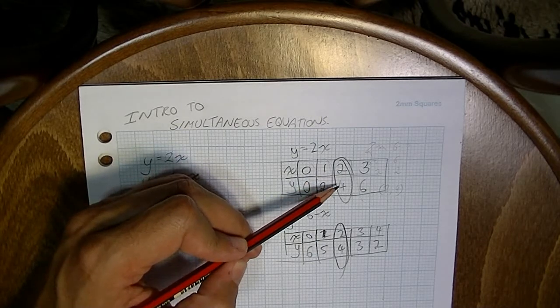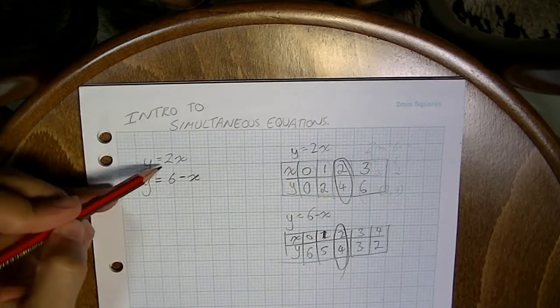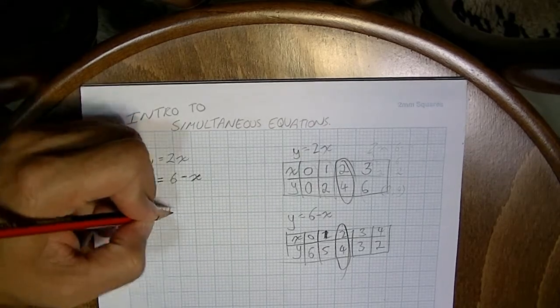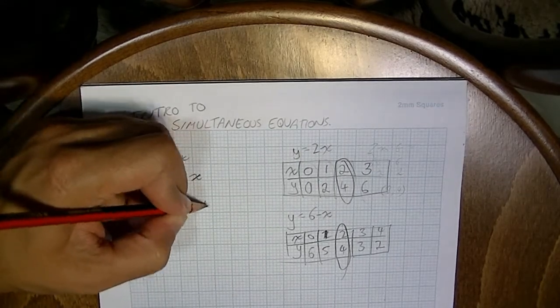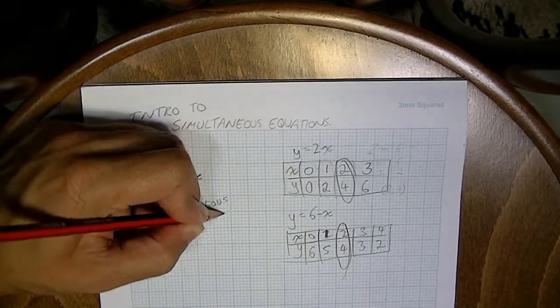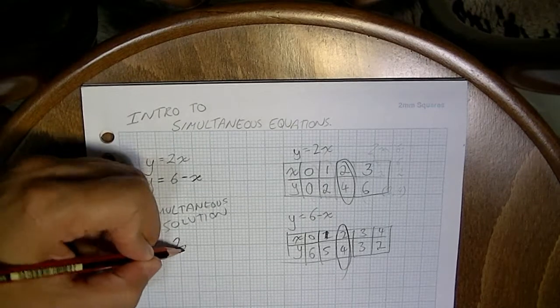Now, an x value of 2 and a y value of 4 works in both of these equations. So the simultaneous solution here is 2, 4.